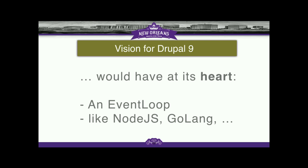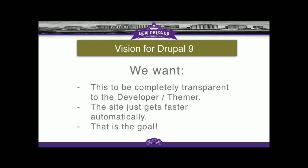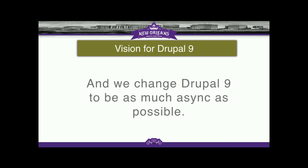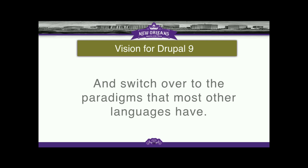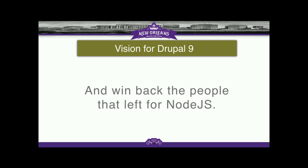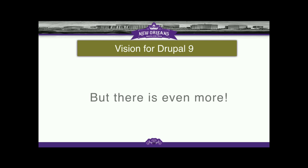The vision for Drupal 9 would be that Drupal 9 would have at its heart an event loop, like Node.js or Golang or whatever. Again, we want this to be completely transparent to the developer — it should just get faster automatically if capabilities are available. We could change Drupal 9 and learn as a community to be as async as possible, switch over to paradigms that most other languages have, and win back those people that left for Node.js.